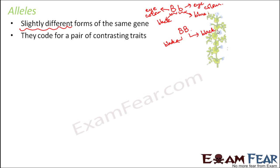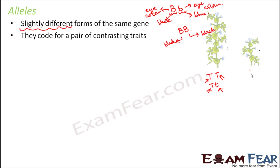Let us take the example of the pea plant. Capital T denotes tall and small t denotes dwarf. A tall plant can be represented as capital T capital T — it has received the tall character from both parents. It can also be represented as capital T small t, because when capital T and small t are together, capital T gets expressed. A dwarf plant is represented as small t small t. So T and T are alleles of each other, and capital T and small t are also alleles of each other.